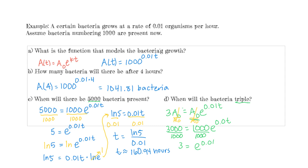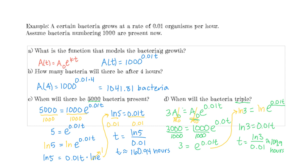The rest of the solving process is just like the previous example. We take the natural log of both sides: the natural log of 3 equals the natural log of E to the 0.01T. The exponent gets brought down and the natural log of E cancels. Solving for T gives us the natural log of 3 divided by 0.01, which has a decimal approximation of 109.9 hours — that's how long it'll take to triple.